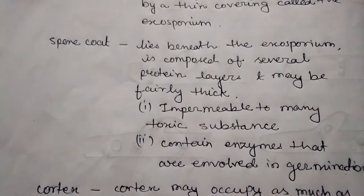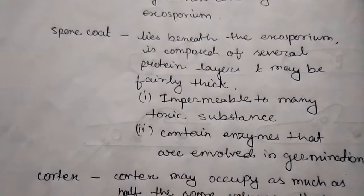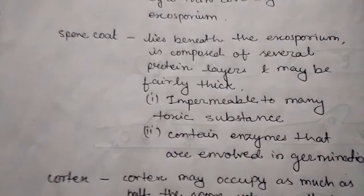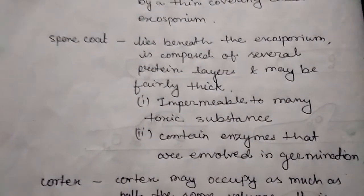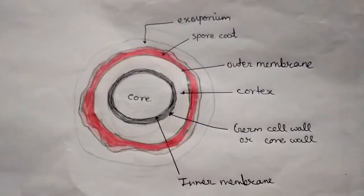Spore coat lies beneath the exosporium, is composed of several protein layers and may be fairly thick. It is impermeable to many toxic substances and contains enzymes involved in germination. Beneath the spore coat there is the outer membrane.